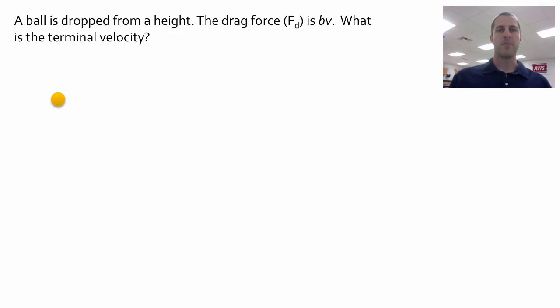So this would be a typical type of problem. We have a ball dropped from a height and the drag force, which we're given, that's our resistive force, is BV, where B is some constant and V is the velocity. Now let's say we want to find what the terminal velocity of the ball is.